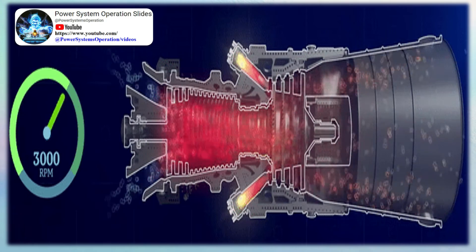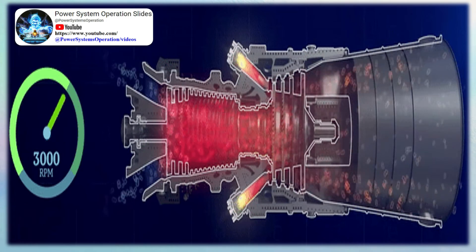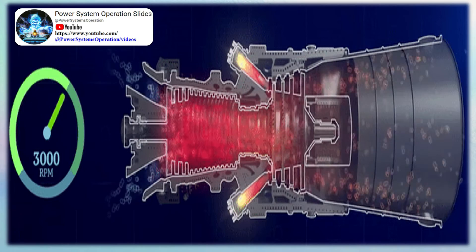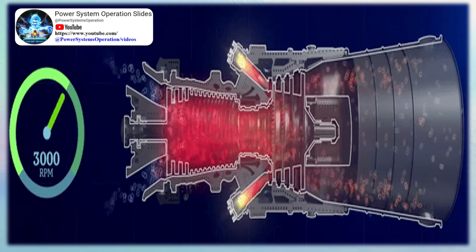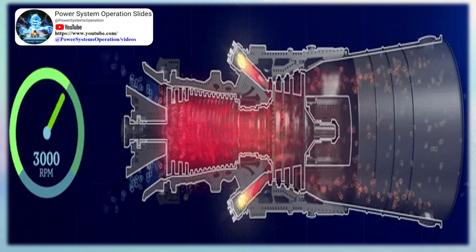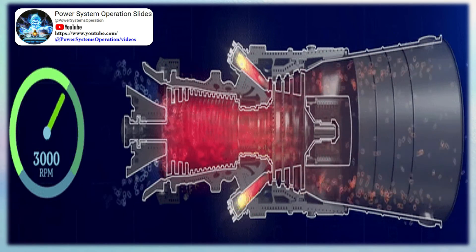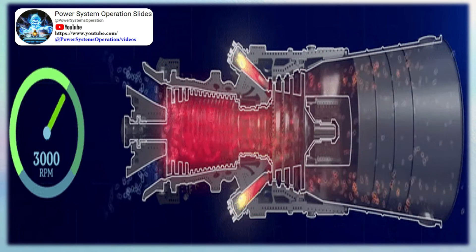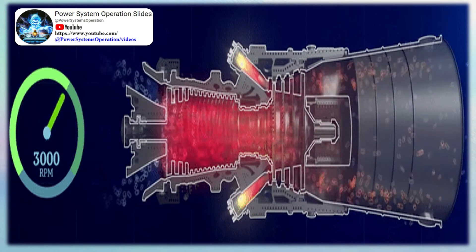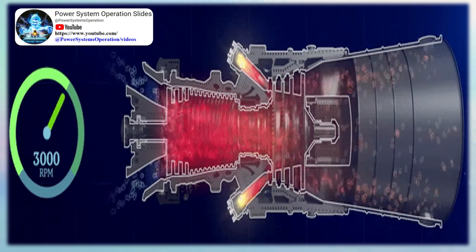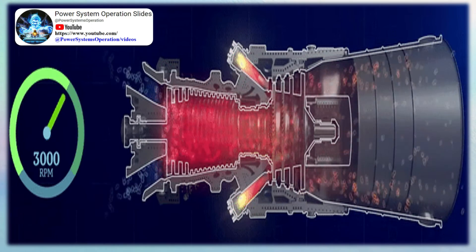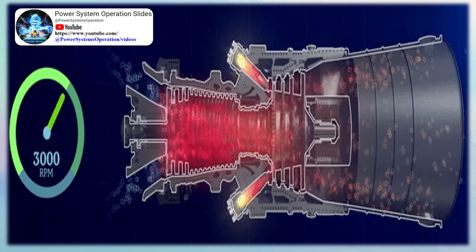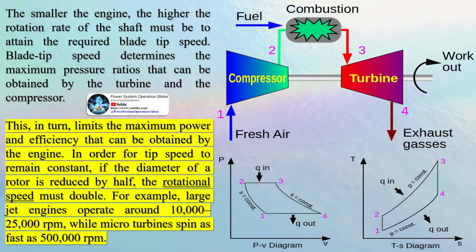The smaller the engine, the higher the rotation rate of the shaft must be to attain the required blade tip speed. Blade tip speed determines the maximum pressure ratios that can be obtained by the turbine and the compressor, which in turn limits the maximum power and efficiency of the engine. In order for tip speed to remain constant, if the diameter of a rotor is reduced by half, the rotational speed must double.